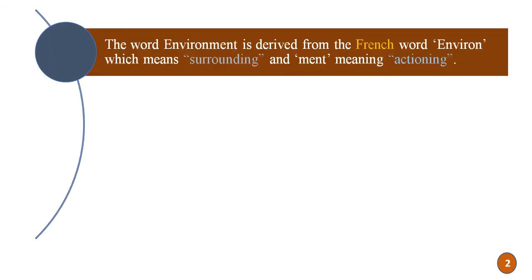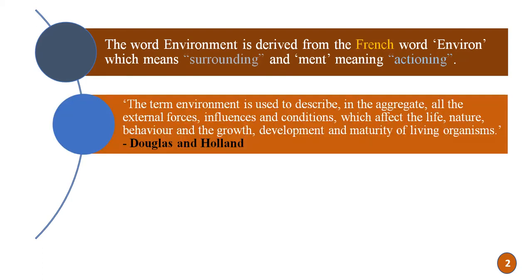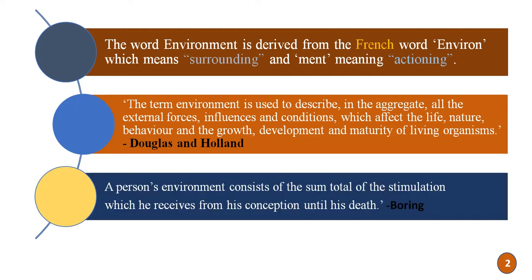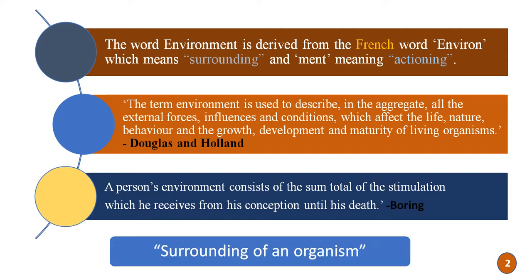The word environment is derived from the French word 'environ', meaning surrounding, and '-ment' meaning the action of. According to Douglas and Holland, the term environment is used to describe in the aggregate all the external forces, influences and conditions which affect the life, nature, behaviour, growth, development and maturity of the living organism. Another scientist, Boring, states that a person's environment consists of the sum total of stimulation which he receives from his conception until his death. So in nutshell, the surrounding of an organism is nothing but its environment.